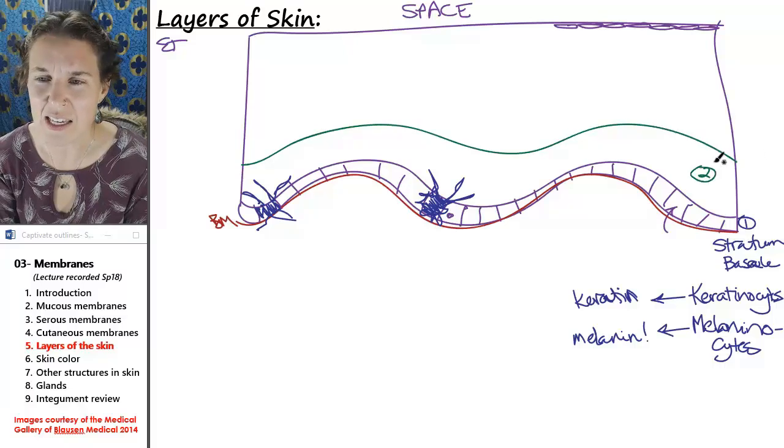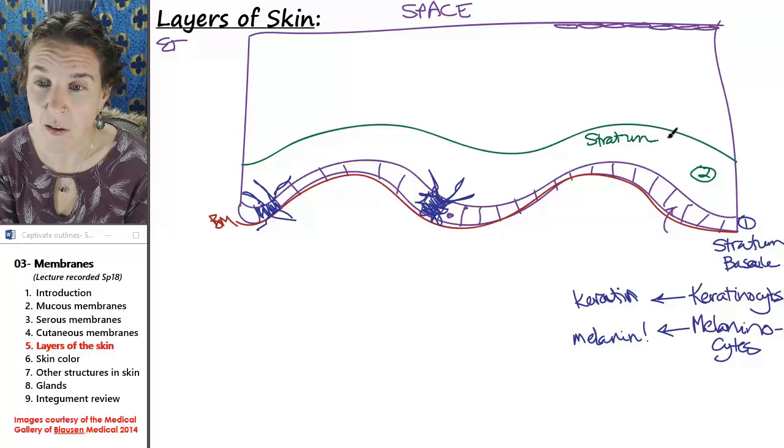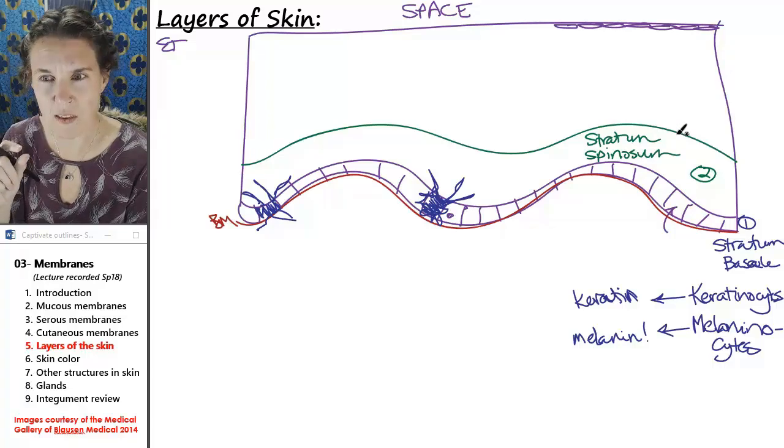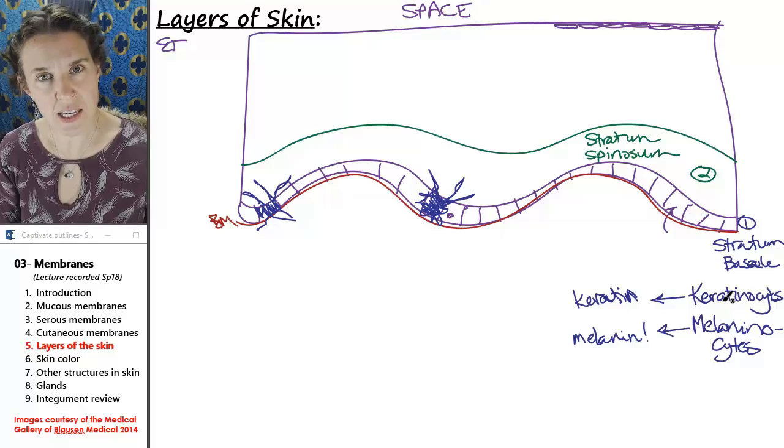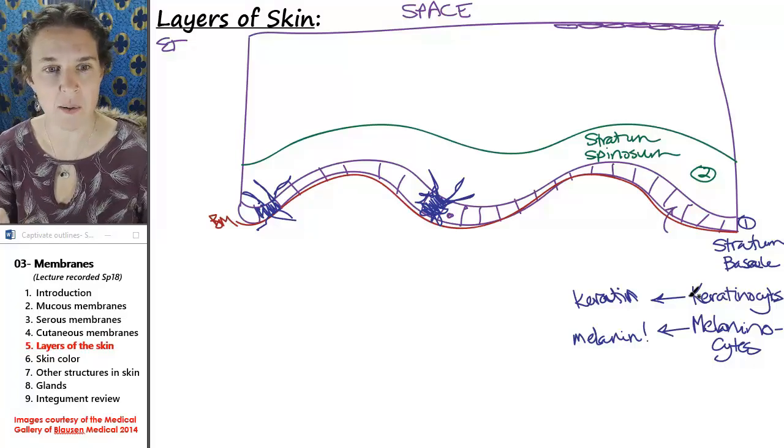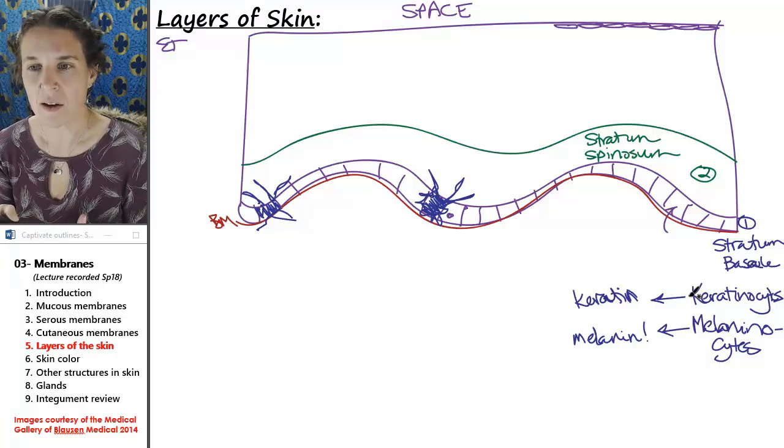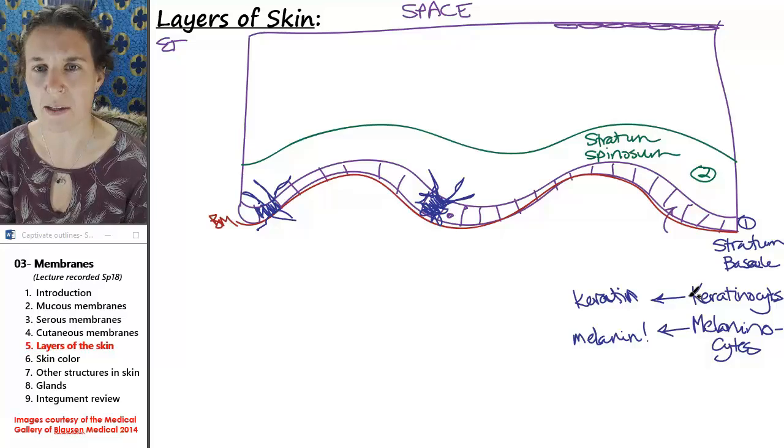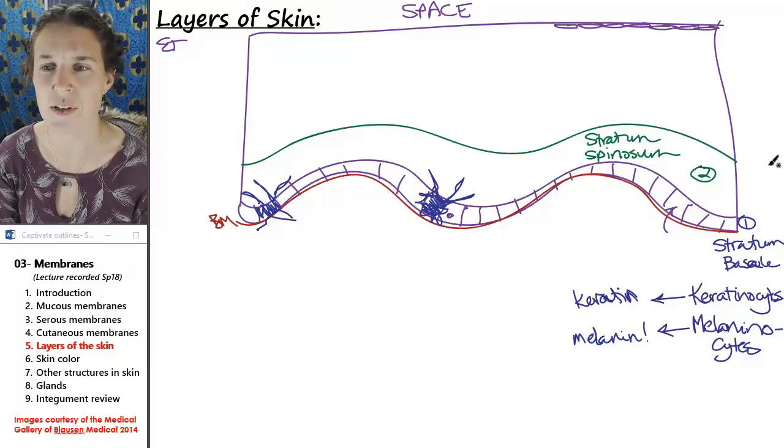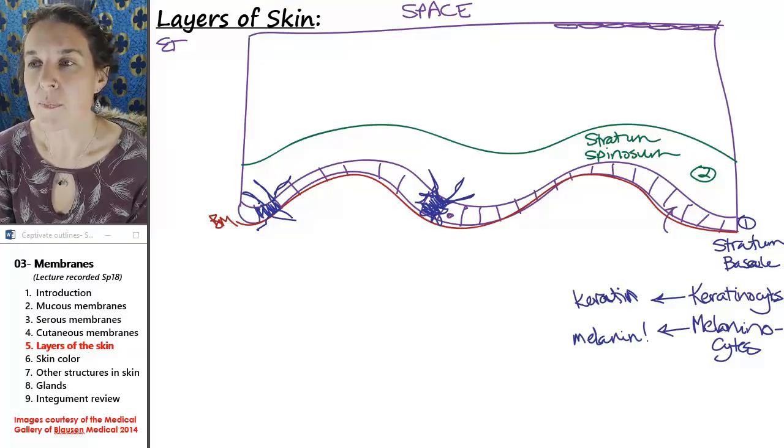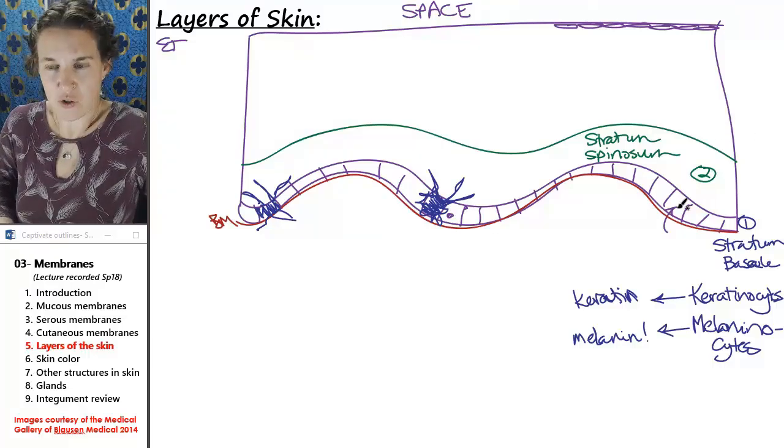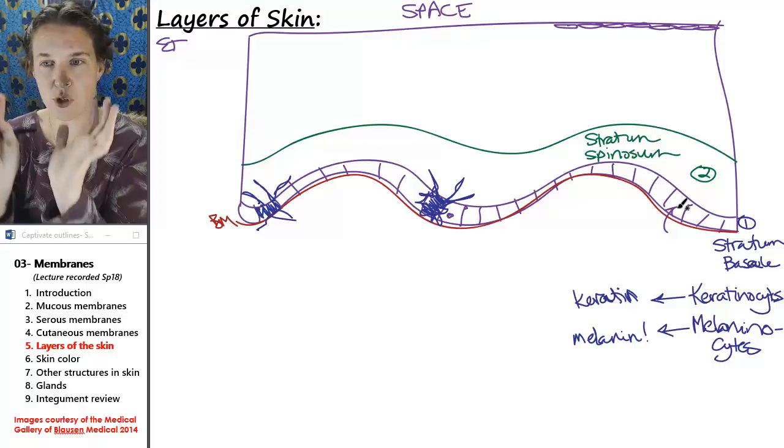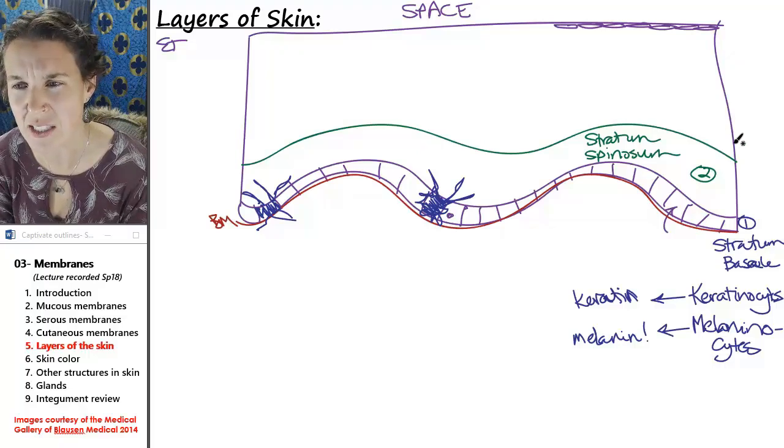The second layer is stratum spinosum. Stratum spinosum is one of the thicker layers of the epidermis, and the cells, the keratinocytes are starting to think about producing keratin, and so they're probably starting to not feel quite so hot. They're reaching the point where it's going to start getting ugly here. The cells, again, this happens sort of organically because stratum basale is still producing more cells that get pushed up into stratum spinosum.